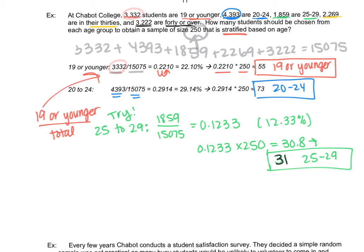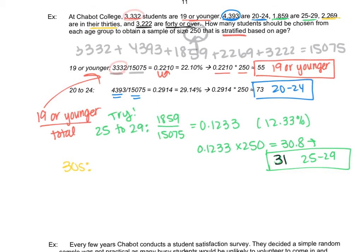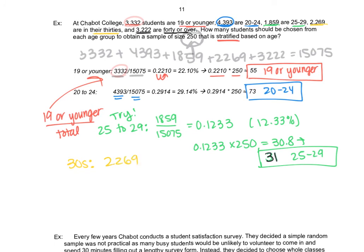If you want to keep trying, pause and do the last two. So we'll do 30s. There's 2269 of them, 2269 out of the total. I highly recommend pausing videos and trying examples on your own, because that's how you're going to learn. I got 0.1505, which is about 15.05 percent. We'll just times that by 250. Because the sample size is 250. And I get about a little over 37, 37.6. So I'll round that up to 38 in their 30s.